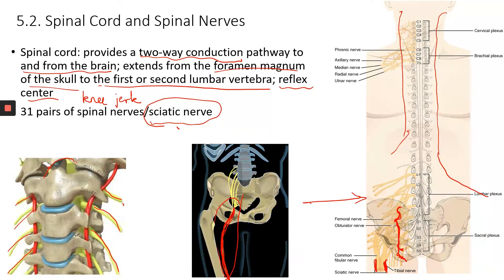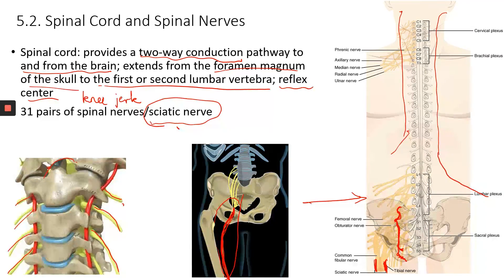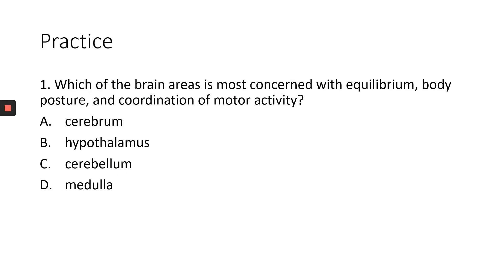If you have a herniated disc in your lower back, it could compress the sciatic nerve, causing pain in the lower back that also shoots down through your entire leg. There's a condition related to sciatic nerve inflammation or damage called sciatica.